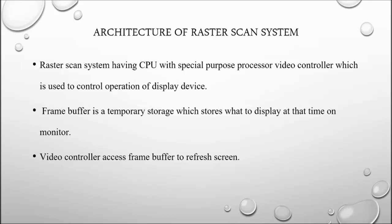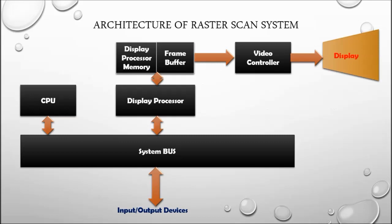This is the architecture of the raster scan system, which has a system bus and input/output devices. It also has a display processor, display processor memory, frame buffer, video controller, and CPU.